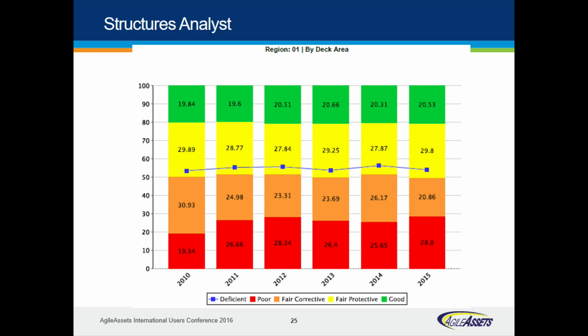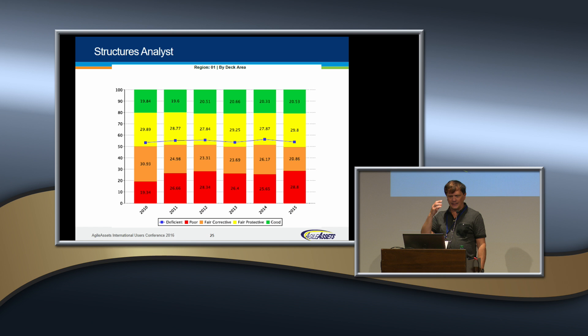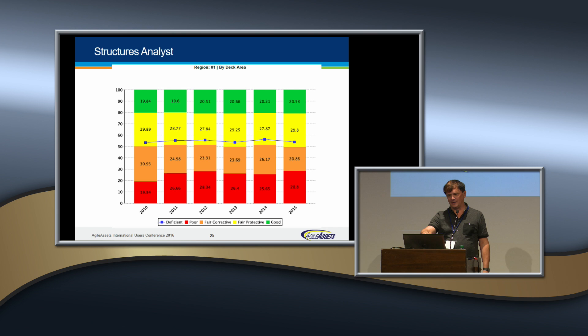Corrective repairs on bridges run a quarter million to a half million dollars. Bridge replacement is five to six million. So to optimize your system, you need to treat as much of it as possible at the lowest cost. Our overall strategy is trying to keep assets in the green and yellow from falling into the orange and red categories — essentially our management strategy.